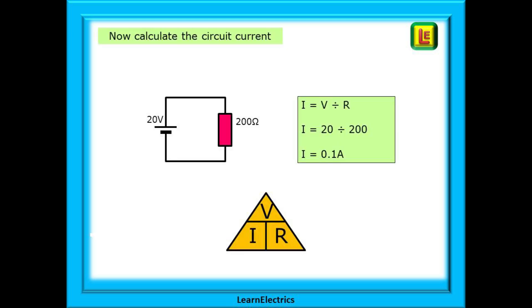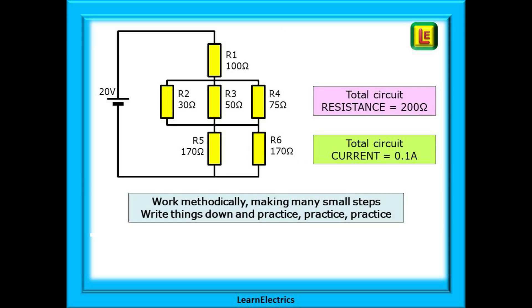Now use Ohm's law to calculate the total circuit current. Current equals voltage divided by resistance, and 20 divided by 200 is 0.1 amps. So in the end, this complicated looking circuit was broken down into easily managed chunks. We found that the total circuit resistance was 200 ohms and that the total current flowing was just 0.1 amps.